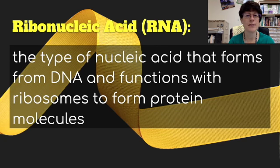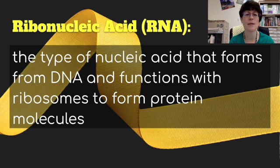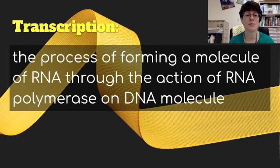There's also another nucleic acid — ribonucleic acid, or RNA. This is the type of nucleic acid that forms from DNA and functions with ribosomes to form protein molecules. That's why proteins and nucleic acids are discussed together. RNA has a different sugar — ribose — and so it has a different name. It also has a different function. It doesn't stay in the nucleus like DNA; it actually travels out of the nucleus to the ribosomes with a code to make proteins. That process is called transcription — the process of forming a molecule of RNA through the action of RNA polymerase on DNA molecules. It will copy the code from DNA to RNA, take that code out to the ribosomes, and make proteins.